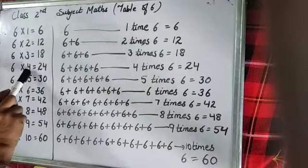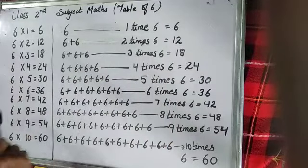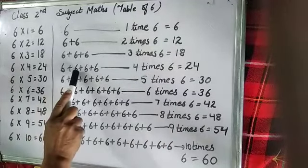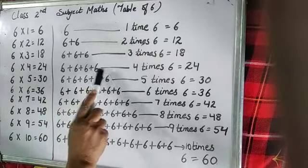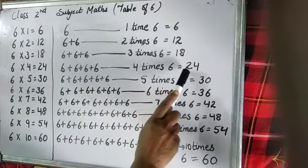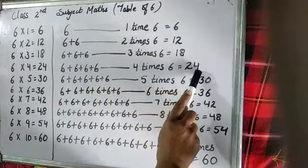6 4s are 24. 1 times 6, 2 times 6, 3 times 6, 4 times 6. And 4 times 6 is equal to 24.